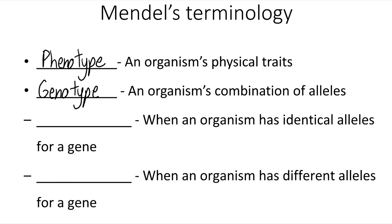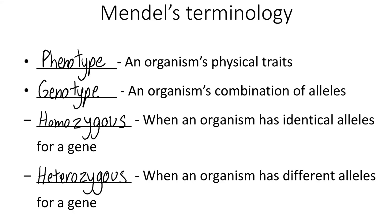There are a couple of terms used when describing genotype. If an individual has two of the same allele — receiving the same allele from each parent — then we say that individual is homozygous for that particular gene, because both alleles are the same. A pea plant could be homozygous for the purple flower color allele, or a human could be homozygous for the brown hair color allele. Now if the two alleles that an individual receives are different from each other, we use the term heterozygous. That prefix 'hetero' means different, so heterozygous individuals have two different alleles — one from their father and one from their mother.